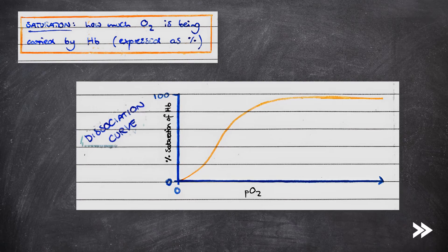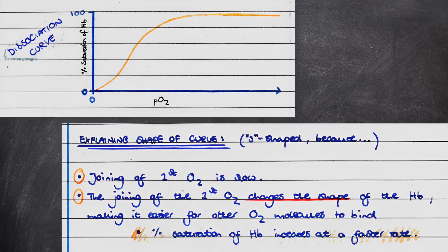We need to be able to explain the shape of the curve. The joining of the first oxygen molecule is a bit more difficult and therefore slower, meaning that at first we have a slow increase in the percentage saturation of haemoglobin. However, the joining of the first oxygen molecule changes the shape of the haemoglobin, making it easier for other oxygen molecules to bind.